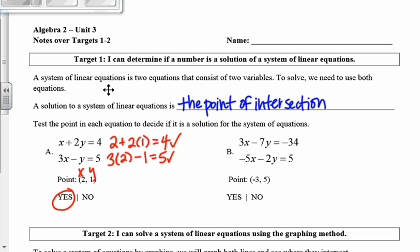Let's take a look at b. Our point is (-3, 5), so remember that's x and y. So 3 times -3 minus 7 times 5 equals -34. That would be -9 minus 35. That is not a true statement. That does not equal -34.